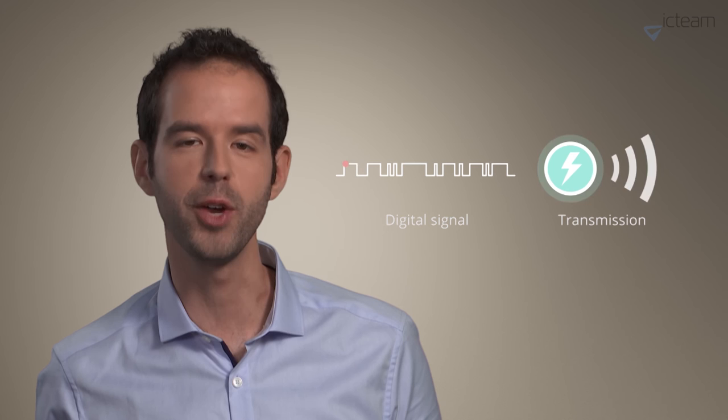For communication, we use impulse radio transmission, where the data is encoded in the timing of short pulses. A digital transmitter can then save a lot of power by activating the expensive frequency generation only when a pulse needs to be emitted.